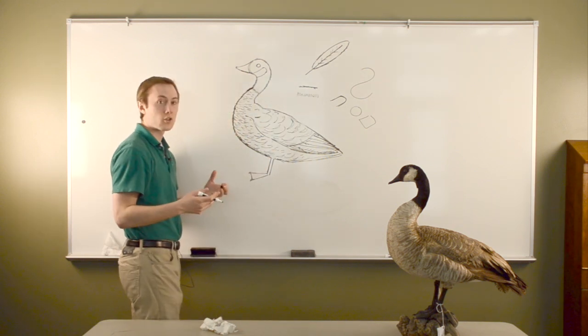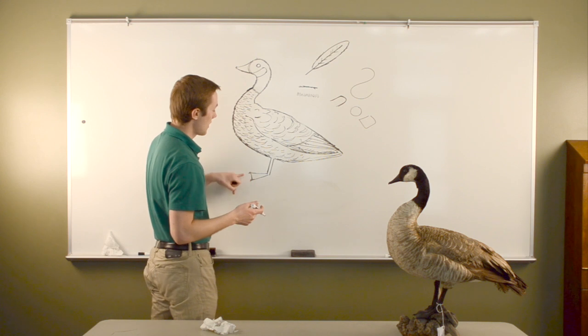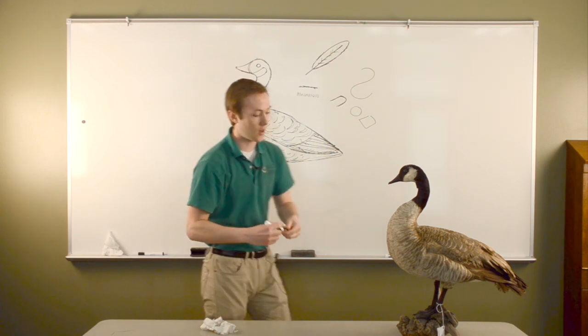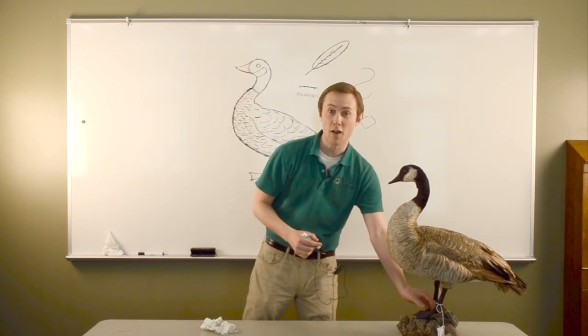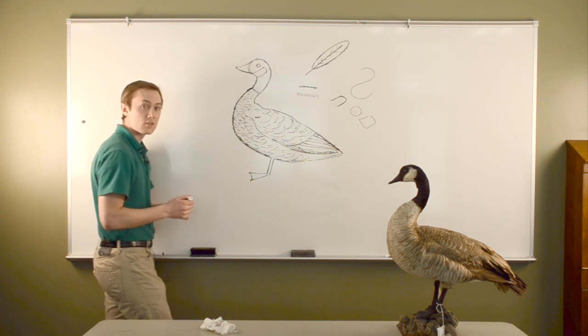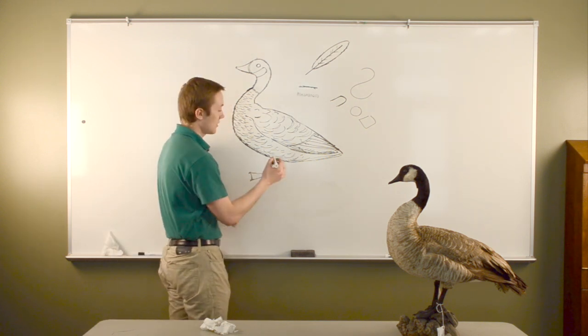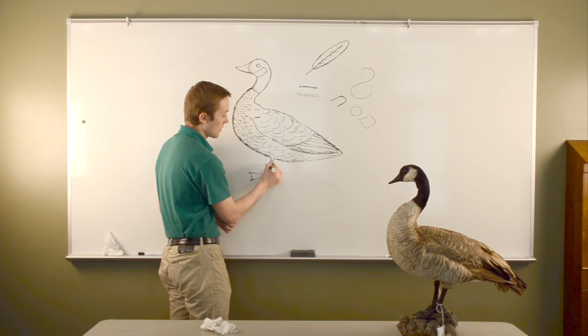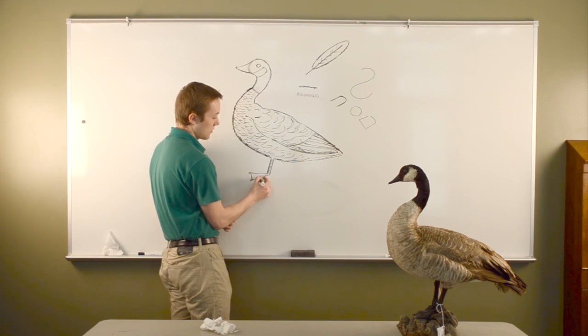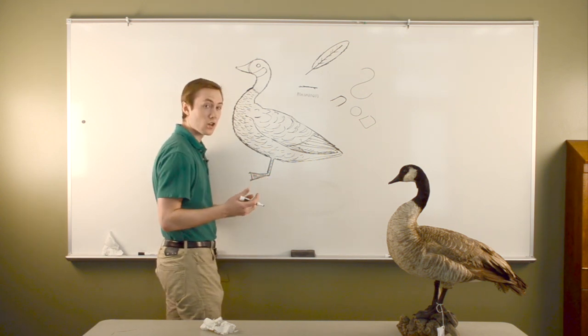The next texture our goose is missing is the texture of his feet. Bird's feet are covered in scales, not feathers. To show those scales, we're going to take some lines and just go down his foot and his leg just like that. And then down his toes, that outside toe, and that middle toe. And that just shows the texture of his feet.